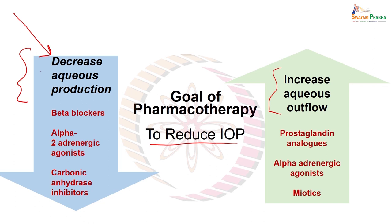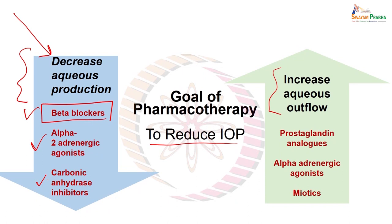Decreasing aqueous humor production is achieved by beta blockers, because beta receptors are present in the ciliary body and are responsible for aqueous humor production. Alpha-2 adrenergic agonists have an inhibitory effect on secretion. Third, the enzyme involved is carbonic anhydrase, and carbonic anhydrase inhibitors are useful.